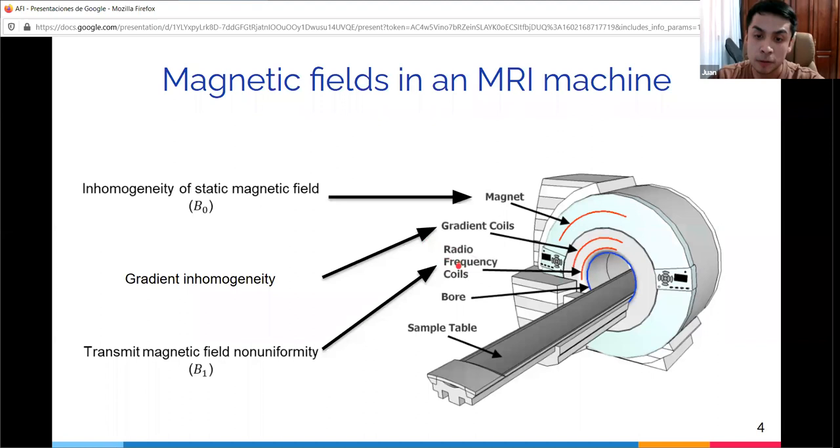This is where the radiofrequency field comes in. This field is produced by a set of coils applied perpendicular to the main magnetic field. The radiofrequency field perturbs or tips the magnetization out of equilibrium in a process called excitation. When the RF field is no longer applied, the nuclei process back into alignment to the main magnetic field in relaxation.